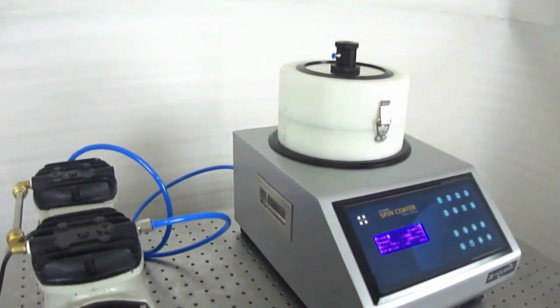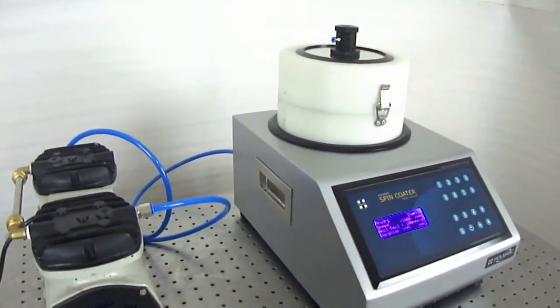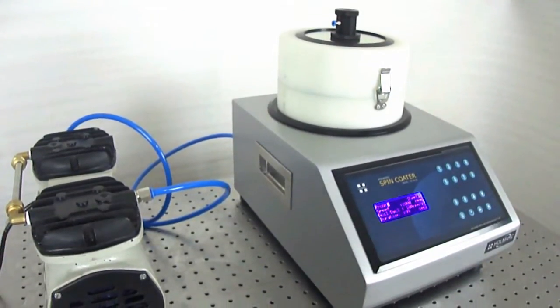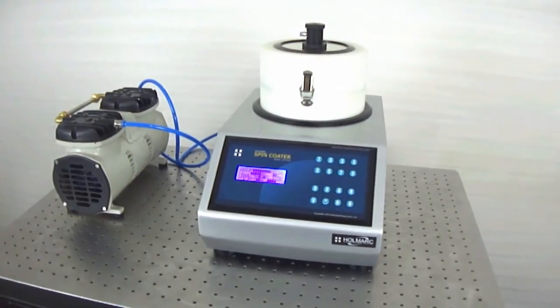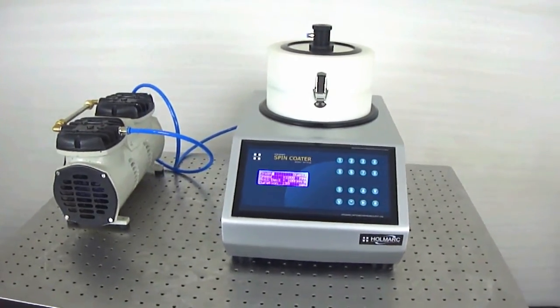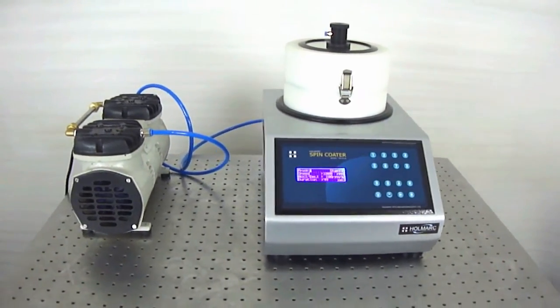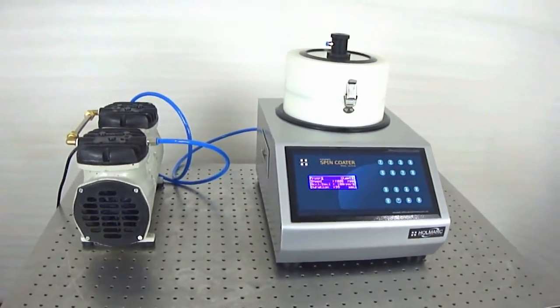HomeArcs Spin Coating Unit is a dedicated tabletop device to spin coat small substrates up to 100 mm in diameter. The device is compact with all electronics built into a single unit, resulting in minimized footprint.